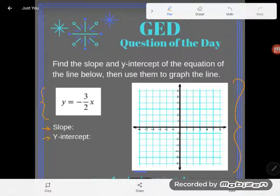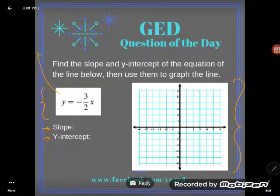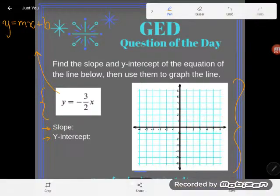The first thing I want you to notice is that this line is already in what's known as slope-intercept form. And don't worry, you don't need to have this memorized. This is on the GED formula sheet. It gives us the slope-intercept form of the equation of a line.